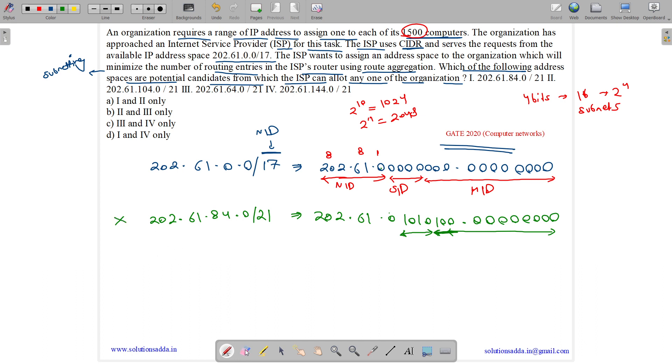Then we have second option, 202.61.104/21. So 104 can be written as 0110100. So these 11 bits are host ID, all zeros, perfect. These four are subnet ID, perfect. And these are network ID, and it is entirely matching. So perfect. So second one can be an option.